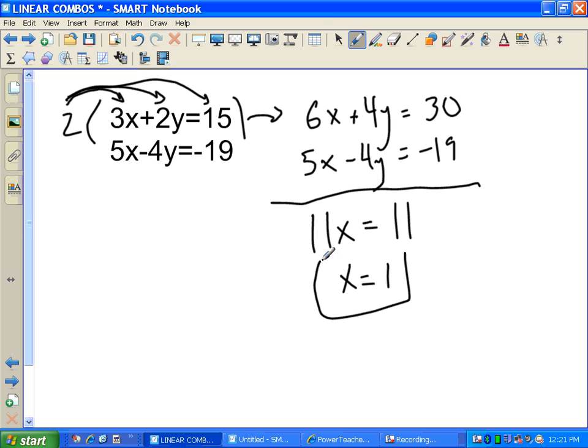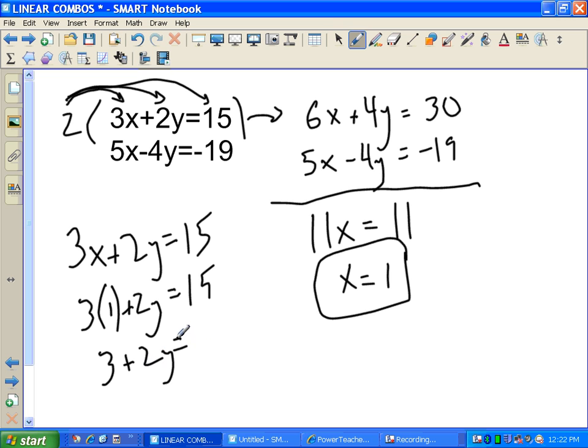Watch, when I add these up, 6x plus 5x is 11x. 30 plus negative 19 or 30 minus 19 is 11. 11 times what equals 11? 1. x equals 1. Solve it. Let's go to the one that's the easiest to deal with. Probably this 3x plus 2y equation.